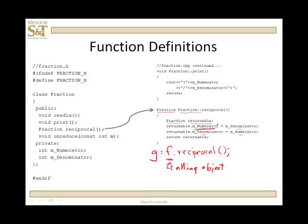Now you might be saying: I can't directly modify the numerator of a fraction. But you can inside a fraction member function. This is a member function of the fraction class, and you can directly access member variables in a member function — so this is legal. I just can't do this outside of a member function. Anytime inside a member function that you refer to a particular member variable, it's the member variable of the object that is calling that function. In this case, f is calling the function.